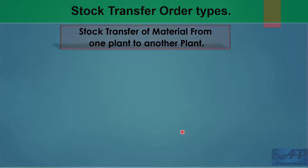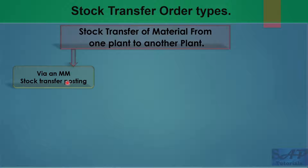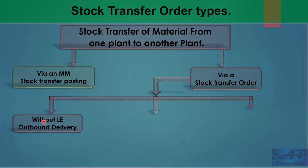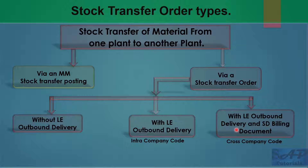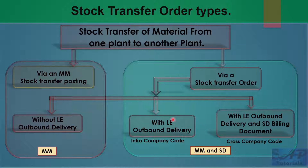I won't cover what stock transfer is since that was covered in the last video. For stock transfer order types, this video is only relevant to stock transfer using STO. We have three types: one is without LE (stock transfer order), another is with LE — that is intra-company — and the last is with LE and delivery plus SD billing, which is cross-company stock transfer order. Only MM is involved in the first type; the other two involve MM-SD integration. Today we cover the without-LE stock transfer order.